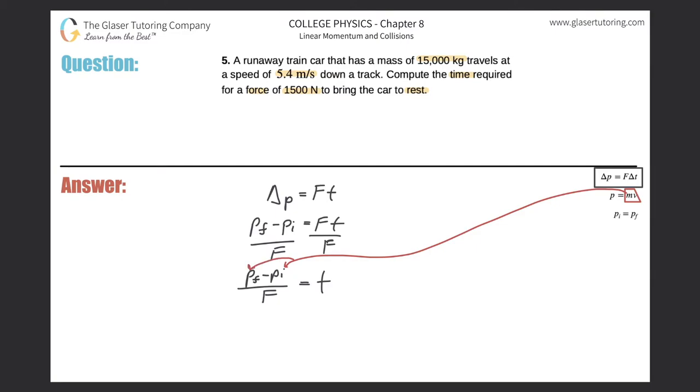Let me substitute those values in for the momentums. So what's going to happen now is the final momentum will be a function of the mass of the object multiplied by the final velocity, minus the mass times the initial velocity of the object, all divided by the average force, and that shall equal the time.